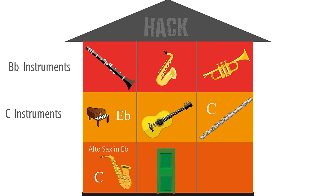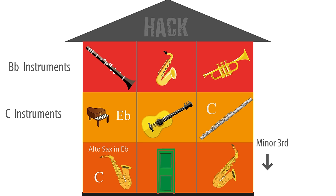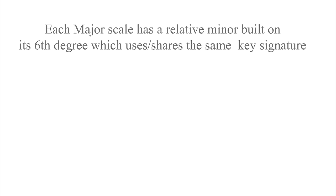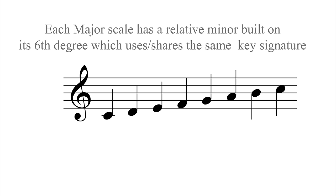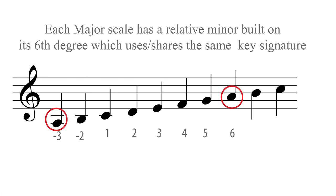Now let's look at this gap. What does the alto sax need to play if the flute plays a C? Answer: it needs to play a minor third below. And so what is a minor third below C? Yes, it's A. By the way, this interval relationship is the same between the major and minor — C major's relative minor, A minor, is built on its sixth degree, which can also be thought of as a minor third below.